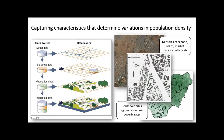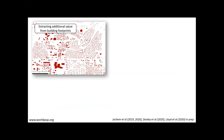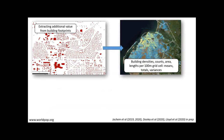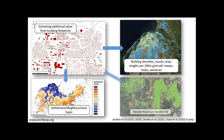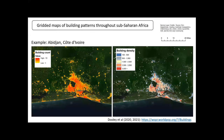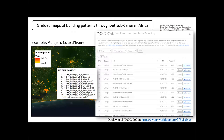Building footprints are processed to get different types of information: building densities, where dense buildings indicate high population; different neighborhood types based on building size and spacing; and identification of residential versus non-residential buildings — commercial warehouses tend to be much bigger. These building pattern datasets are available to download from the WorldPop website for every country in sub-Saharan Africa.